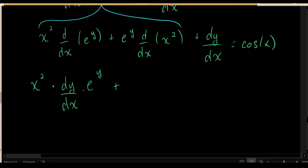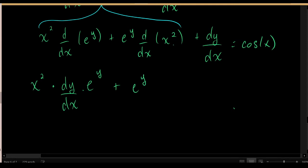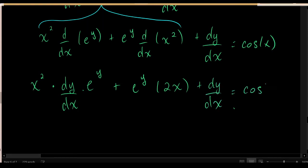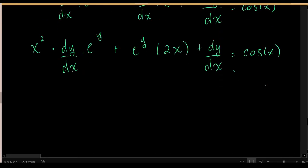That completes the first term. Next we have e to the y times the derivative of x squared with respect to x, which by the power rule is 2x. Now all the derivatives are calculated and this expression is completely simplified.